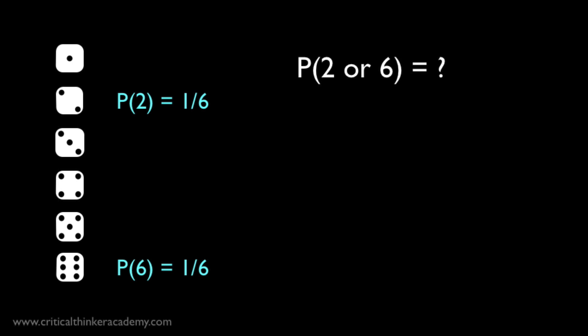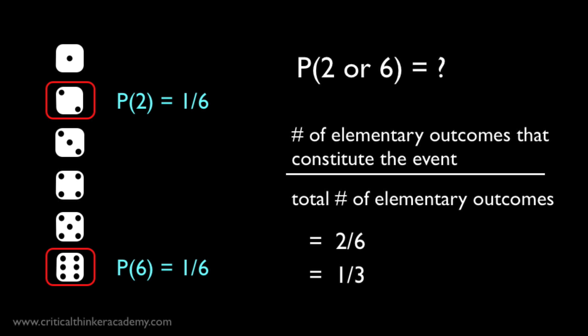In this case, we can actually count the elementary outcomes to get the answer. There are six possible elementary outcomes, and the event in question picks out two of these outcomes. So the probability of getting a 2 or a 6 is just this ratio, which is equal to 2 over 6, or 1 third.